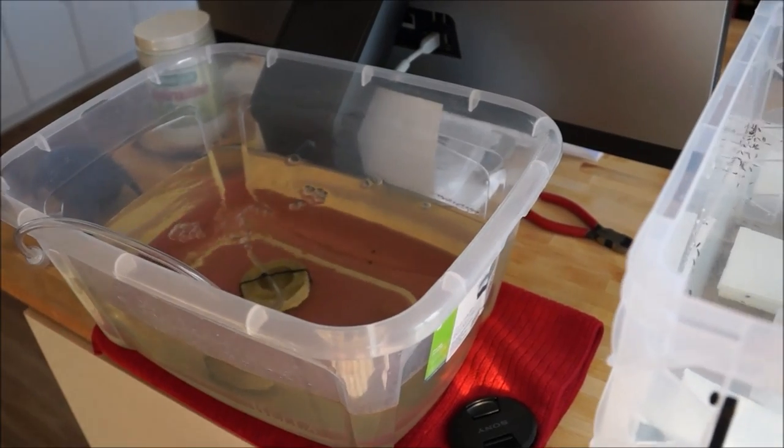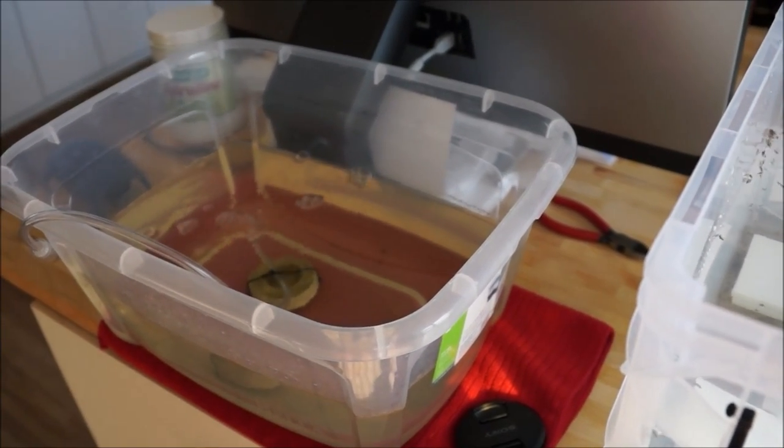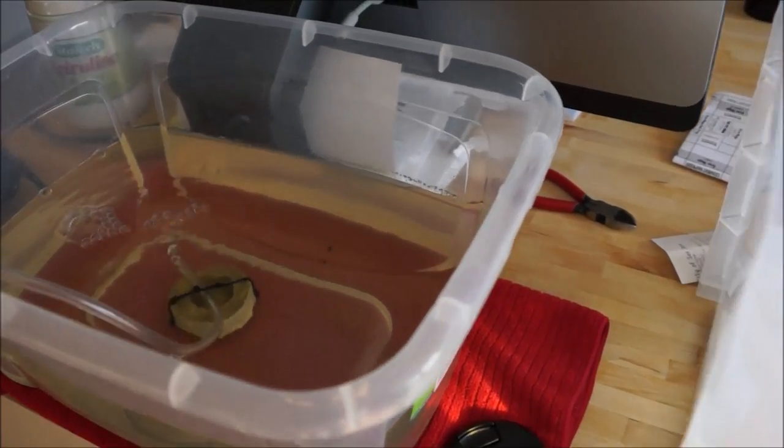After that, it's a full water change. Once the brine shrimp are adult, I just filter them in a net and put them in new water and feed them to the fish and start a new batch.